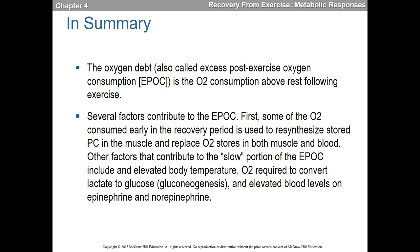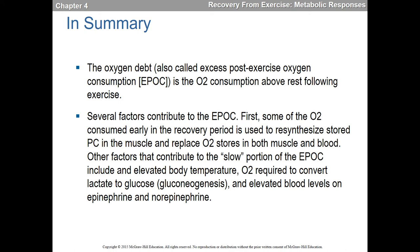Moving on: metabolic responses to short-term intense exercise. Typically there are two types of energy generation — anaerobic and aerobic — with a push and pull between them. The more intense and shorter the duration, the more anaerobic. The less intense and longer the duration, the more aerobic. Anaerobic means without oxygen; aerobic means with oxygen. The primary anaerobic energy systems are the ATP-PC system and glycolysis.